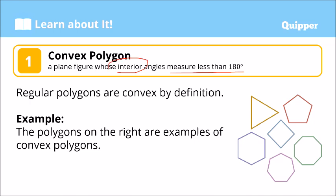Interior angles. So we have here, let's say, this triangle. All of its interior angles are less than 180 degrees. So these are convex polygons.